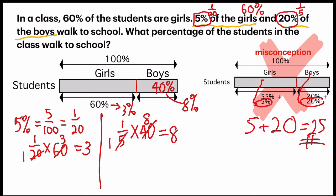So now that goes to our final answer. We are going to add the girls and the boys together. The percentage, so 8 plus 3 equals 11. And our answer is 11% and not 25%.